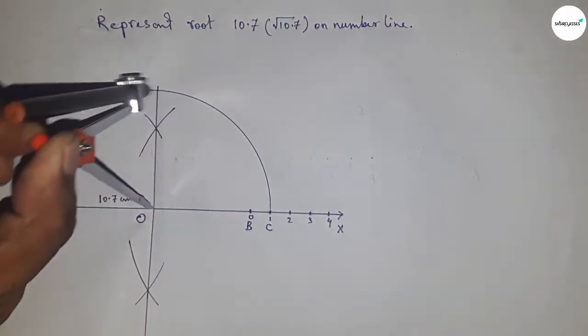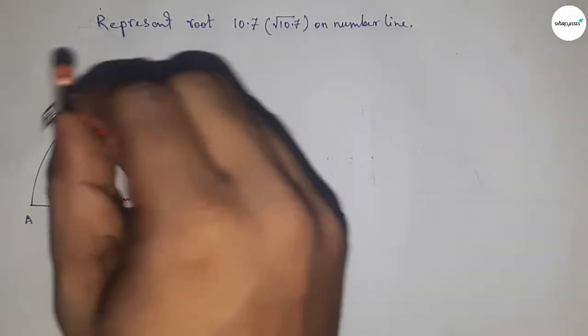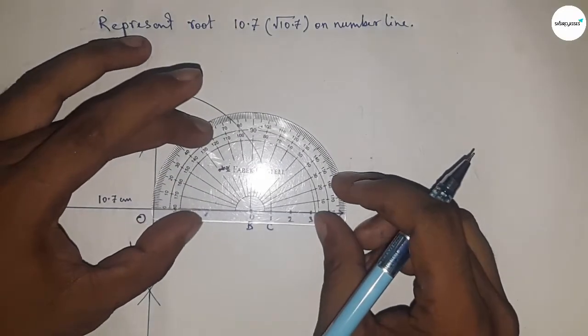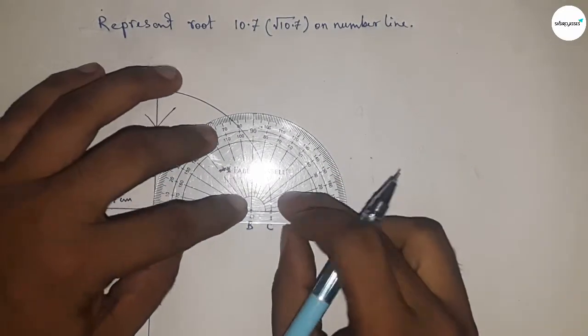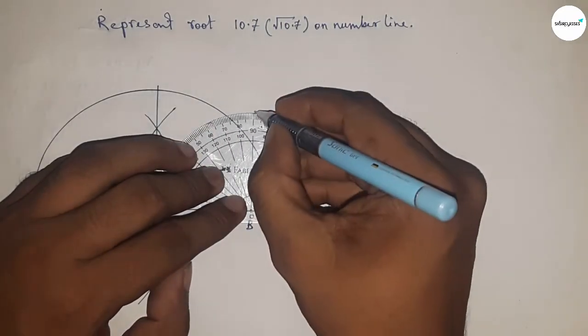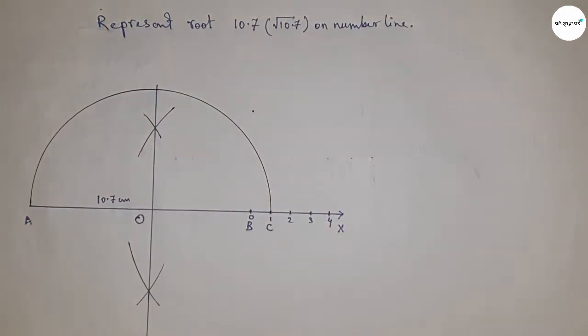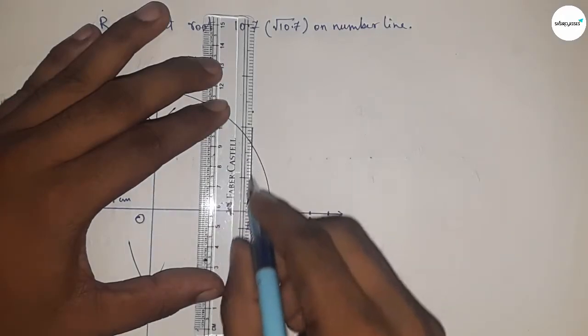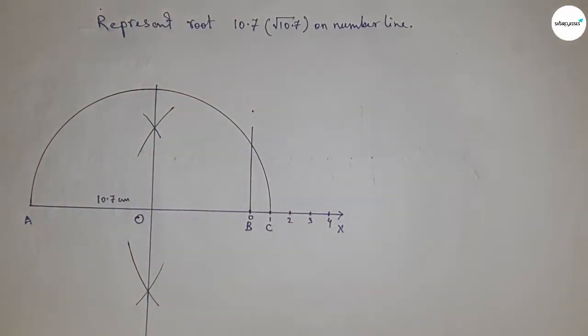Next, drawing a 90 degree angle on the point B by using protractor. Now joining this which meet the semicircle at a point D. Next, joining O and D, the radius of the semicircle.